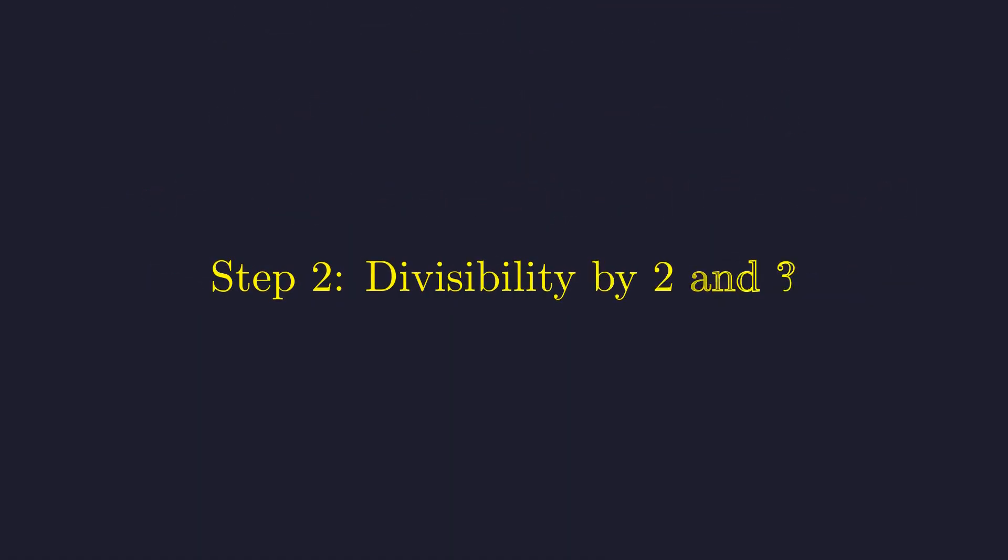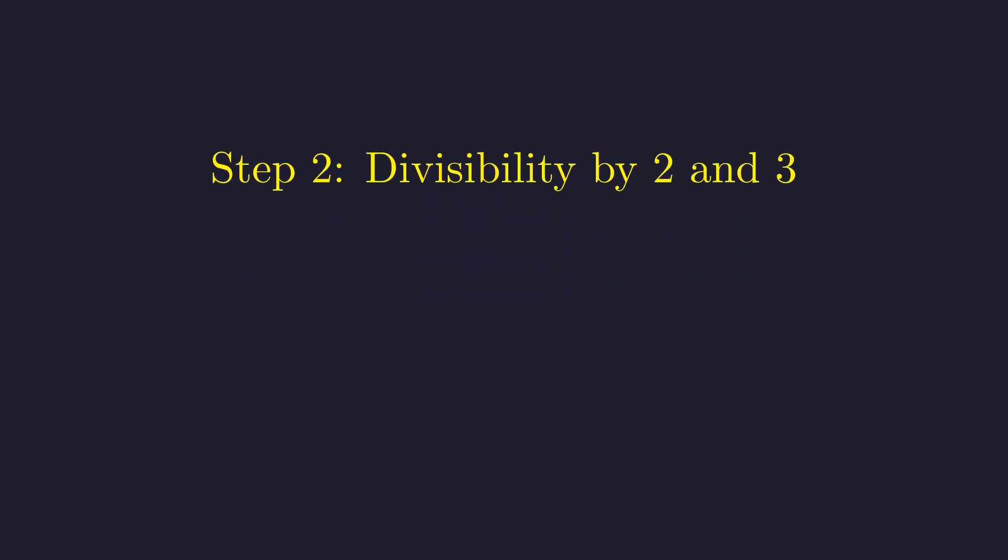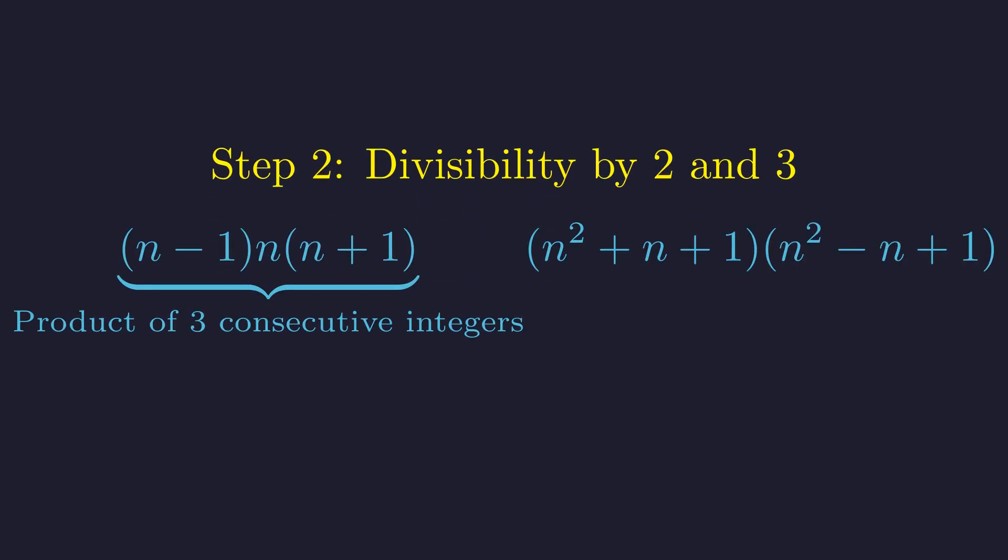Now that we've factored everything, let's tackle divisibility by 2 and 3. The beautiful thing is we can handle both at once. Focus on this first part: (n - 1) × n × (n + 1). This is the product of three consecutive integers.